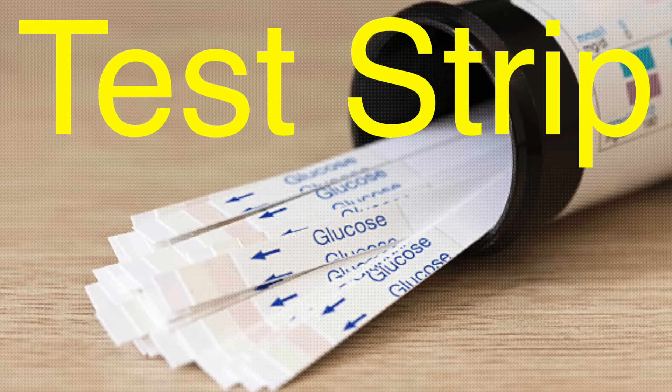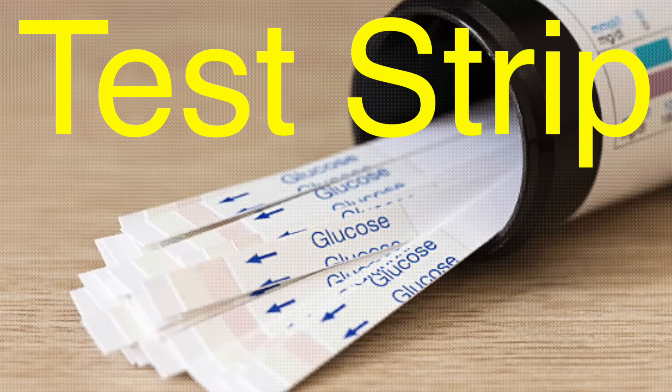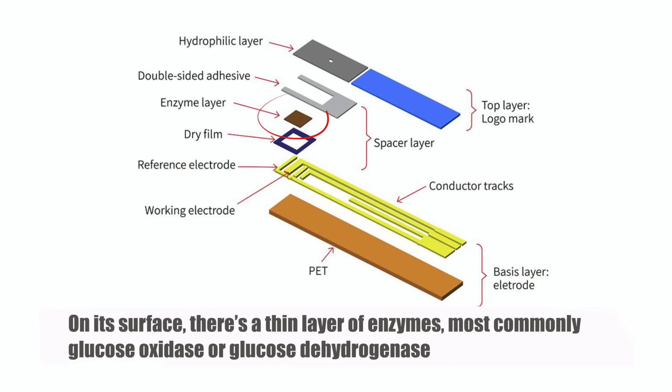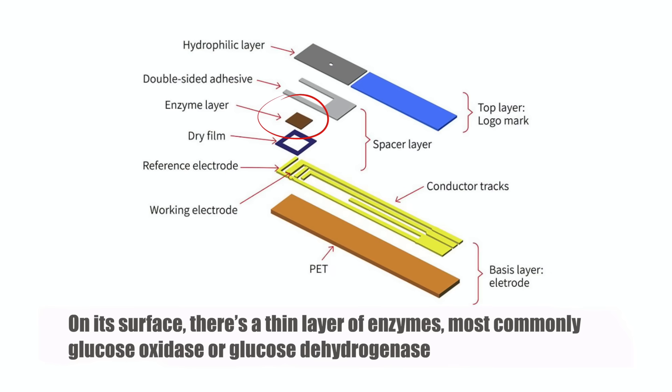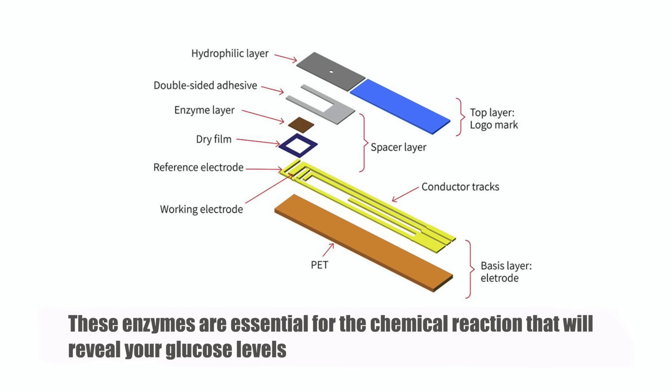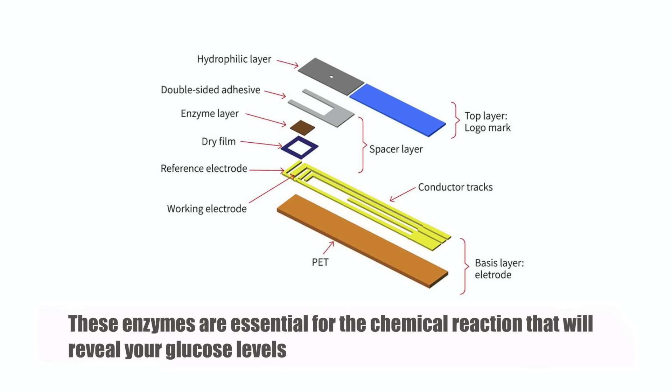The test strip is a crucial component. It's more than a simple piece of plastic, it's a high-tech marvel. On its surface, there's a thin layer of enzymes, most commonly glucose oxidase or glucose dehydrogenase. These enzymes are essential for the chemical reaction that will reveal your glucose levels.